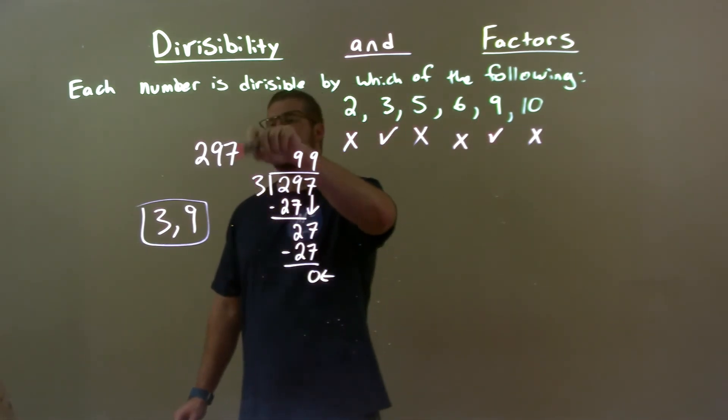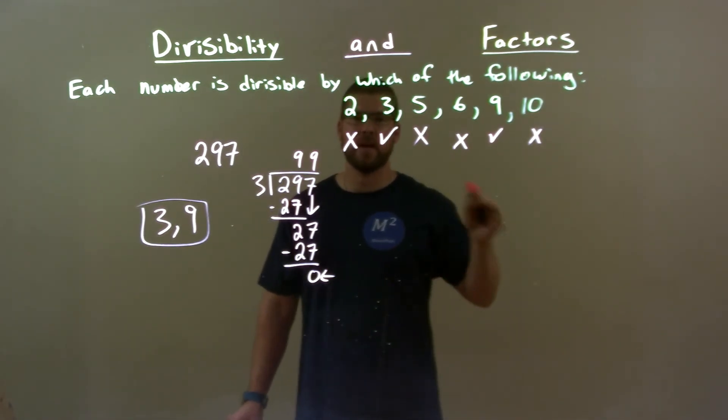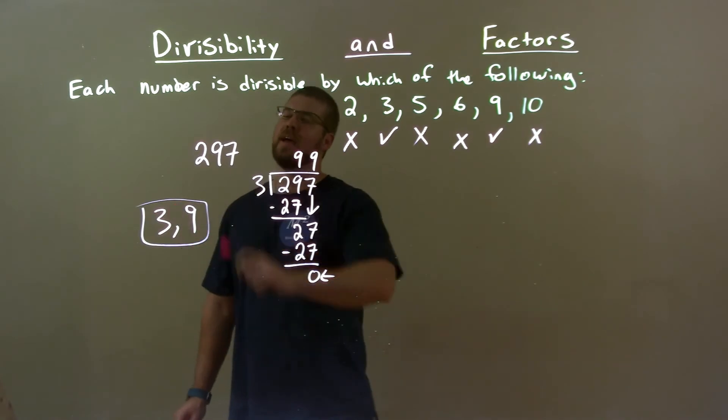5 doesn't work because we don't end in a 5 or 0. If 3 works, 9 must work, and so again, final answer is just 3 and 9.